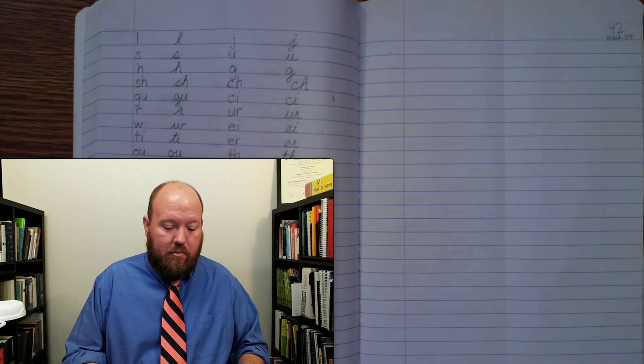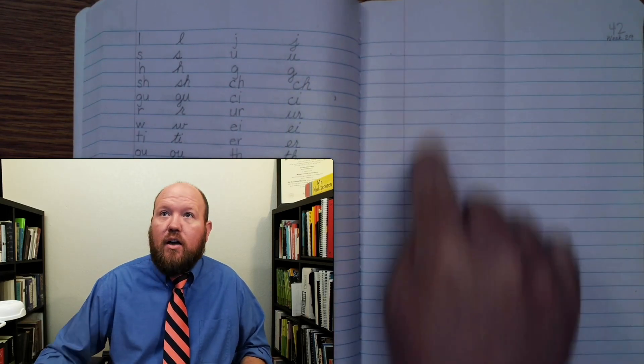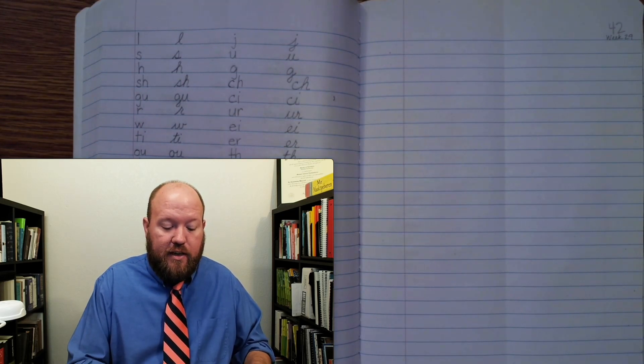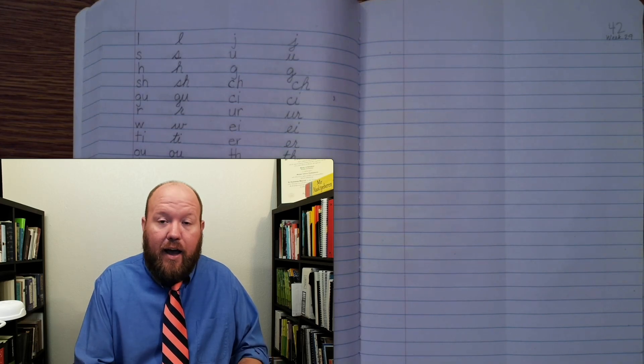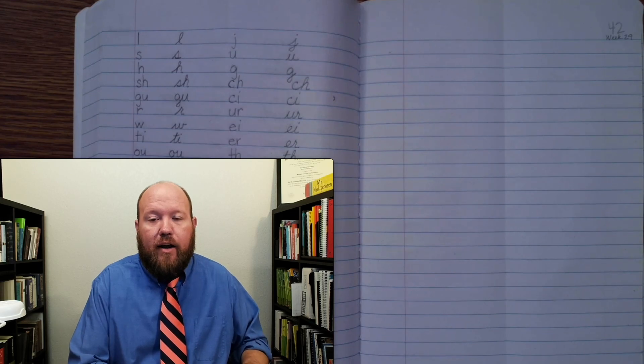All right, now we'll do the written phonogram review. So again, make sure you're in your book. We're going to use this third column right here. I will say the sound followed by the cue if there is one. You should say the sound and the cue if there is one, and write it. Okay, when you write it, write it without looking at what I write. Write it from memory.